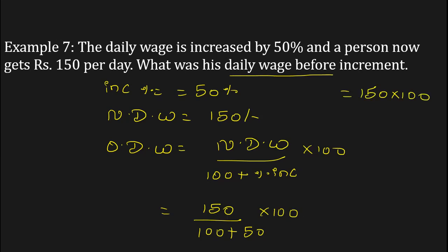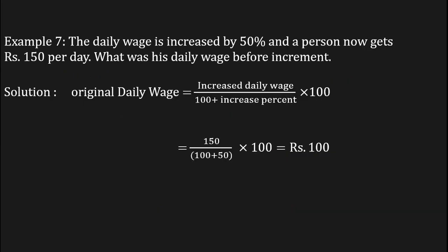100 / (100 + 50), which is 150. That equals 150 × 100 / 150 = 100. The answer is 100 rupees is the daily wage before increment. In this way you can solve the given problem.